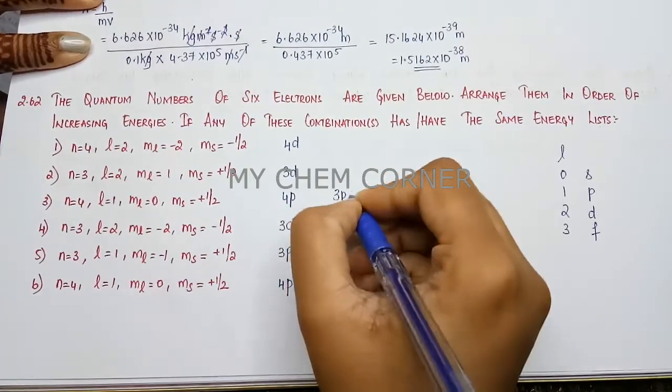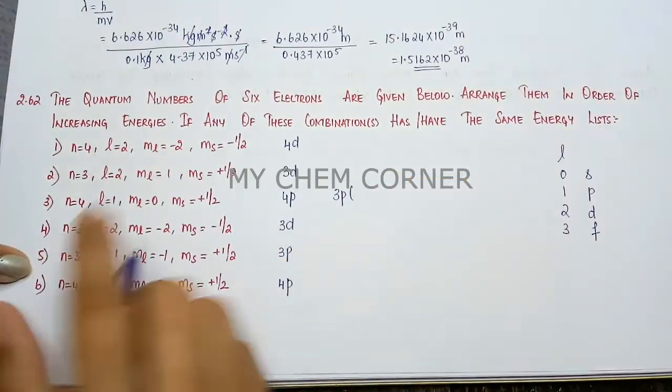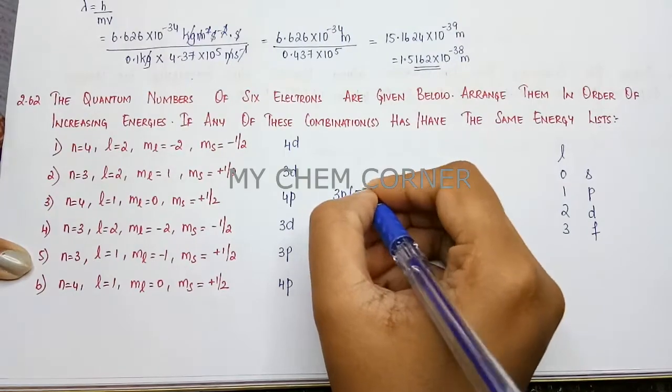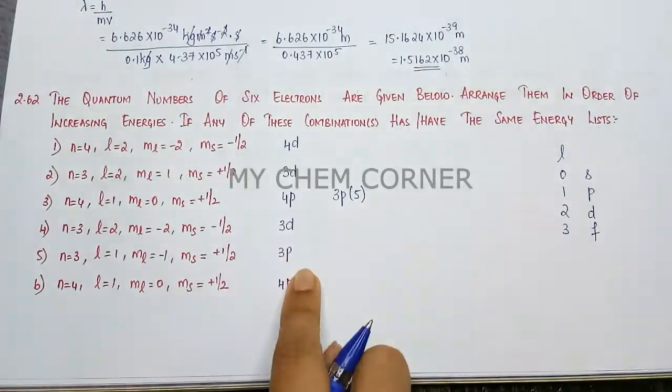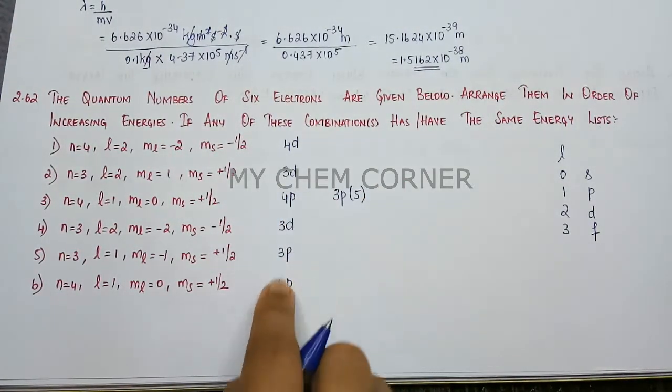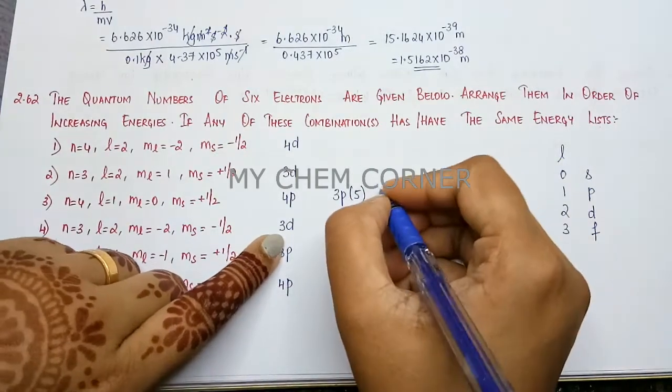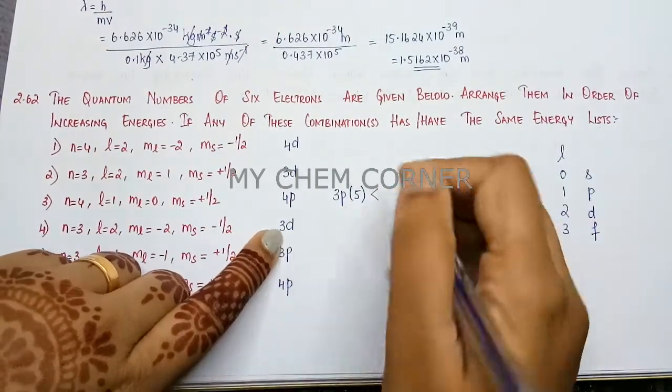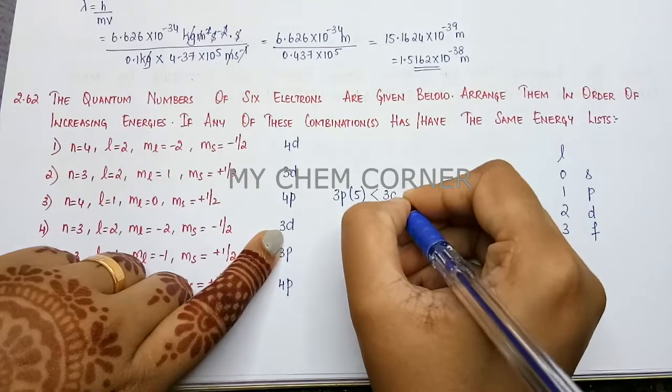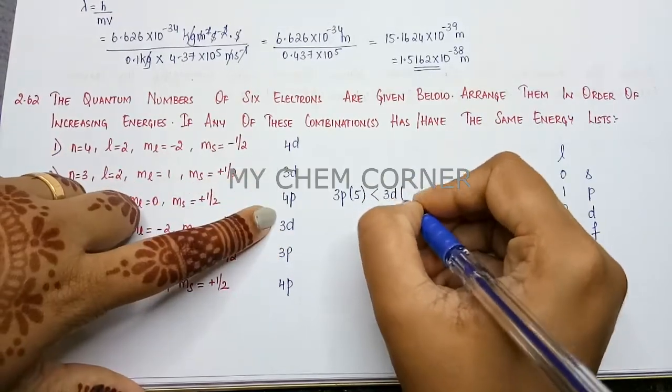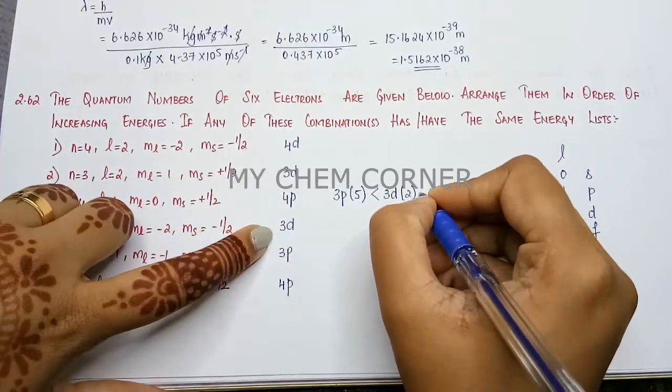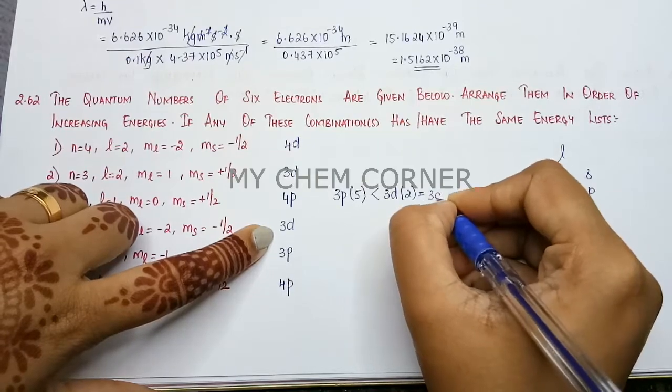3p, and in brackets I'm putting the question number so we know it is from there. Because we have repeated orbitals, after this we have 3d. We have two 3d here, so both have same energies. 3d from question 4 also.